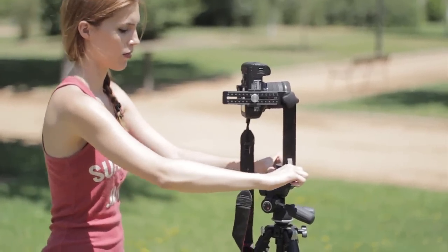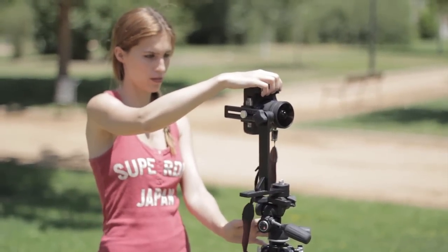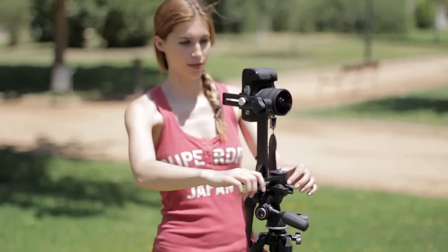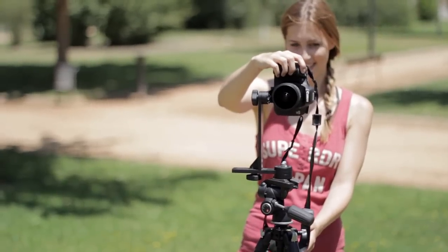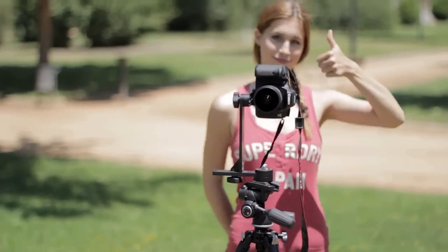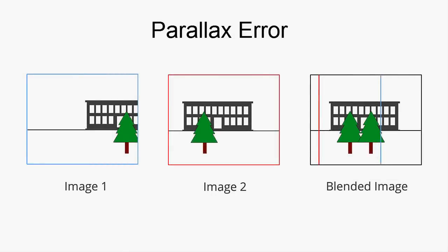Before using the software, you need to take your individual photos. For a full 360 degree panorama, you need to capture every single spot in your surroundings with your camera. Depending on your lens, this will require more or less photos. You can use any camera and any lens, whether it's a DSLR camera or even a mobile phone. Nonetheless, there is some equipment that will make your life a lot easier. A common problem in panoramic photography are so-called parallax errors.